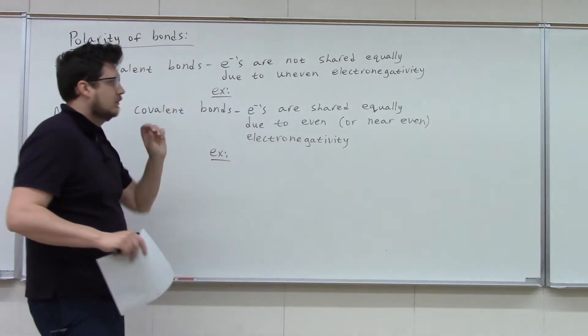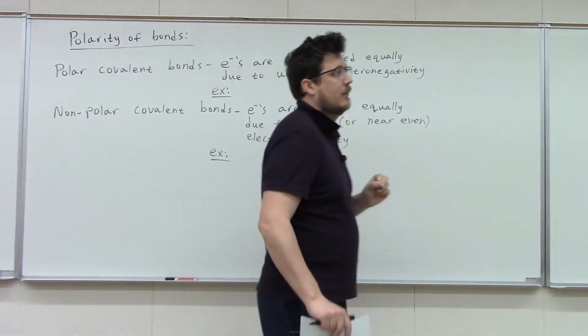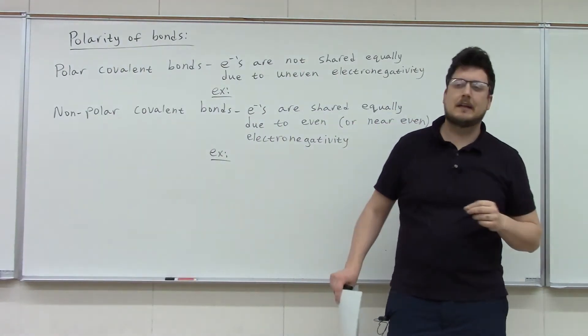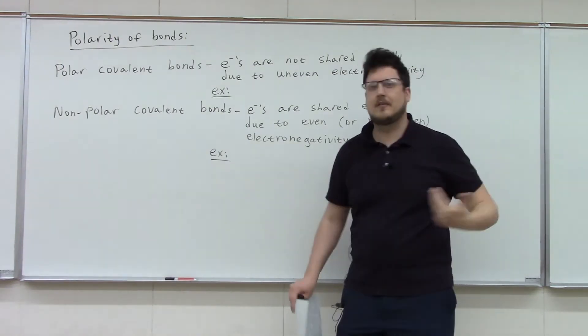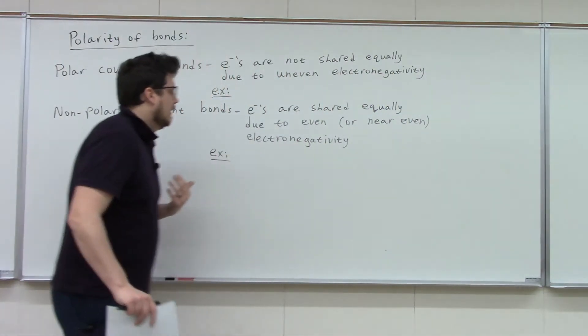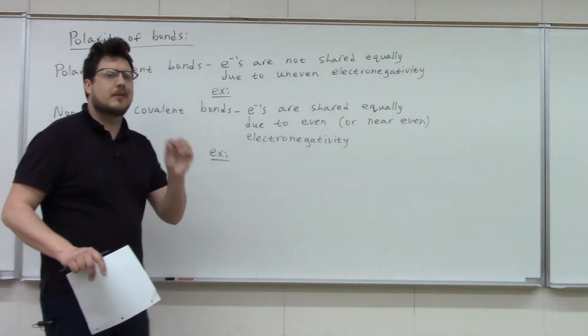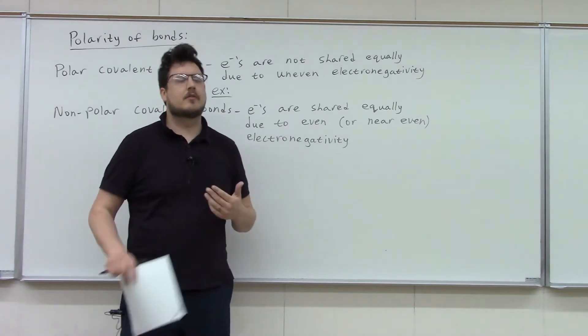And there's some different definitions. Your book has a really, really strict definition, basically delta EN of zero. So the difference in electronegativity has to be zero. So they have to be matching elements. But oftentimes something like carbon and hydrogen is considered a nonpolar bond. It's usually a little bit of wiggle room in there. Your book's a little unusual there.